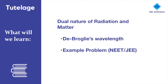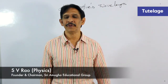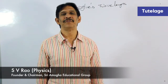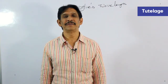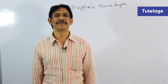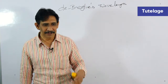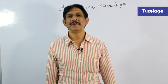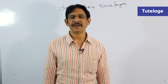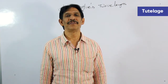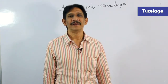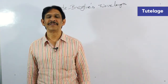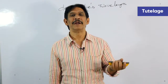Today we are going to discuss the De Broglie wavelength. As we know, light has dual nature. At times, light behaves as particles, and at times light behaves as waves. To explain the phenomena of light like interference, diffraction, and polarization, it behaves as waves. And to explain the phenomenon of light like reflection and refraction, light behaves as particles.